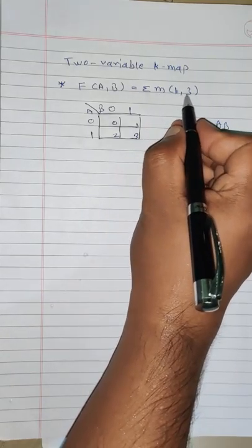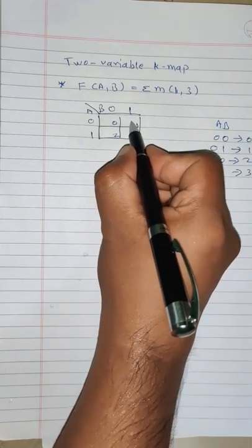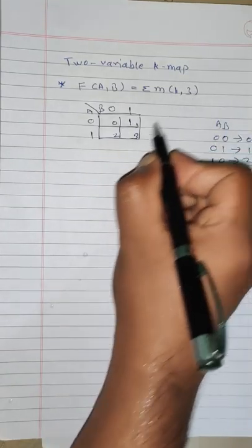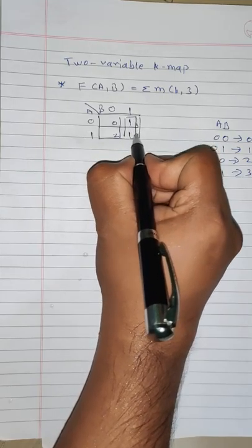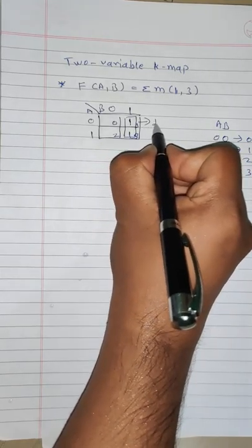Now, summation of min terms 1 and 3. So in the box of 1, we will write 1, and in the box of 3, we will write 1. We can make a group of these two ones, and that will be our group number 1.